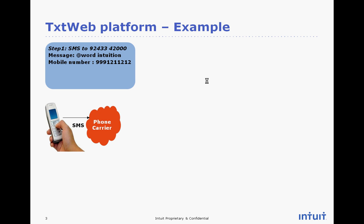This is a well-known number that the user would save in their contact book, and this is the number they would send to access any application on the TextWeb platform. They send the keyword "@word" to indicate that word is the application they're trying to access, and the word they need to look up the meaning for is "intusion." This request gets sent, and along with that, the user's mobile number is also sent.